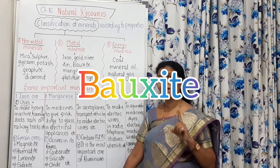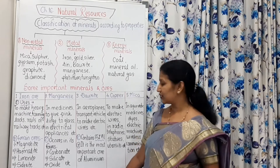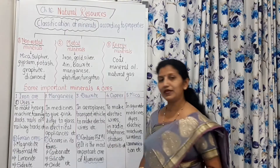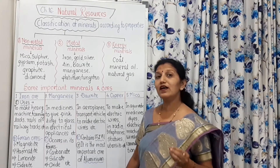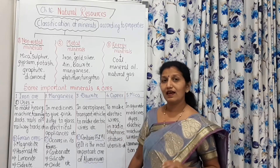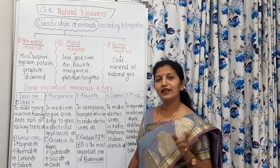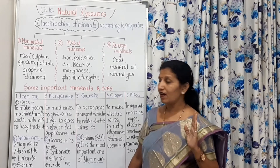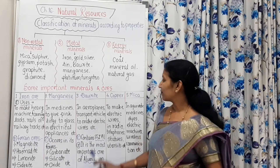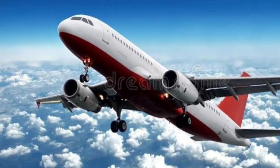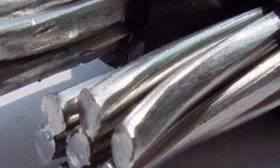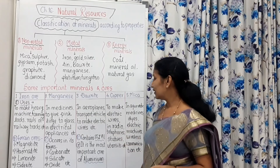Bauxite is the most important ore of aluminium. It occurs in the form of aluminium oxide and contains near about 55% aluminium. Since aluminium has low density and good conductivity of heat and electricity, it is used in aeroplanes, transport vehicles, and to make electrical wires.